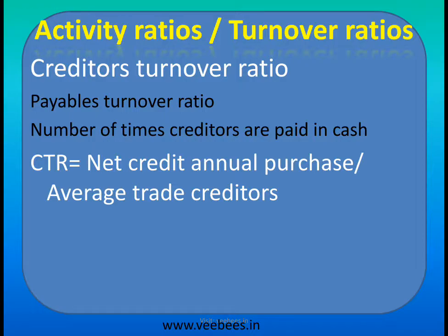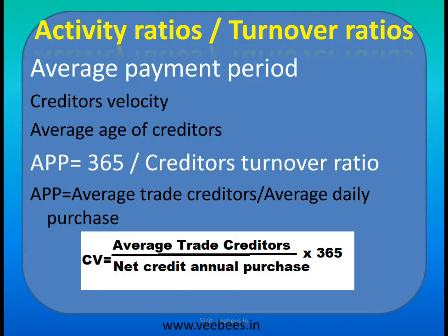Here it is just the opposite — net credit annual purchase divided by average trade creditors. Another related item is the average payment period, also called creditors velocity.